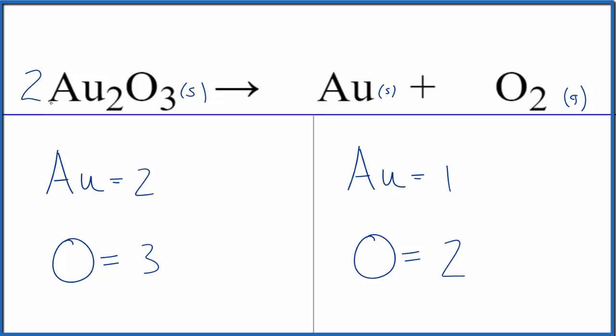If we multiplied everything by two, we'd have three times two. That would give us six oxygens. Two times two, four gold atoms there.